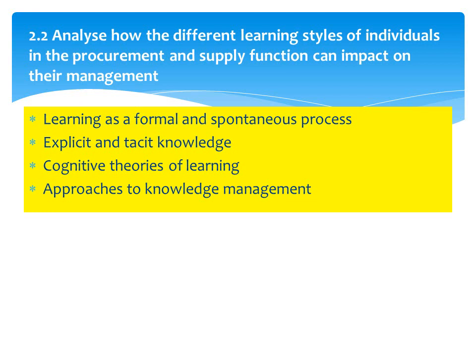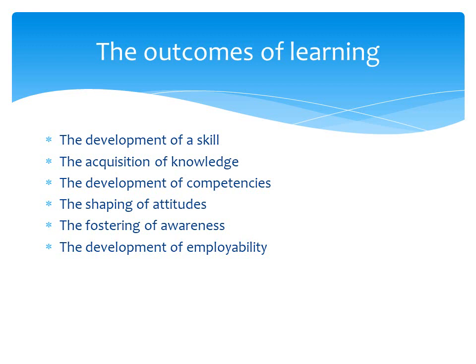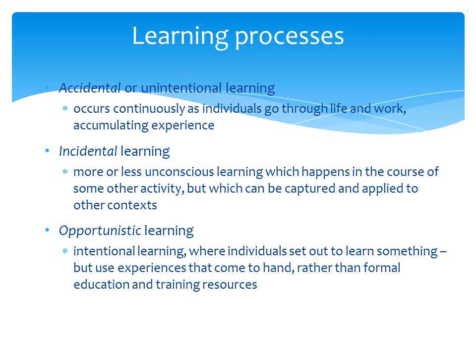Section 2.2 covers learning styles and how to develop knowledge. The outcomes of learning include developing a skill, gaining more knowledge, becoming more confident, changing attitudes, fostering awareness, and developing employability. We can learn deliberately — by going to college or distance learning — but there's also accidental learning through work and incidental learning through mistakes and experience.